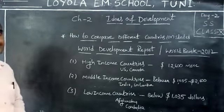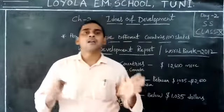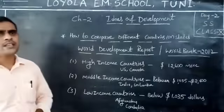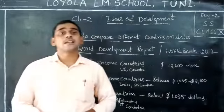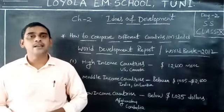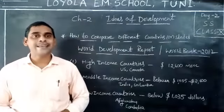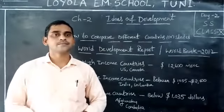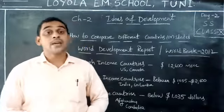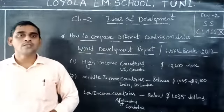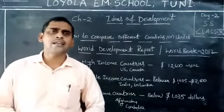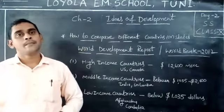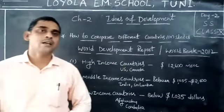What are high-income countries? The countries whose per capita income is more than 12,600 dollars are called high-income countries. Examples of high-income countries include the US, Canada, China, Britain, and Japan.